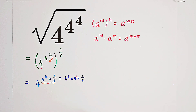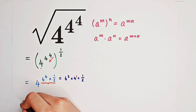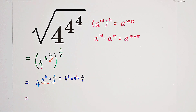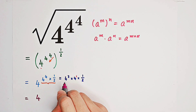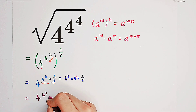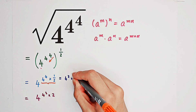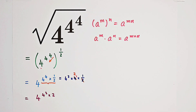Why did I do that? Because I want to cancel the 2 from the denominator. So it is 4 to the power of 4 to the power of 3, times 2 — because here we get 2.